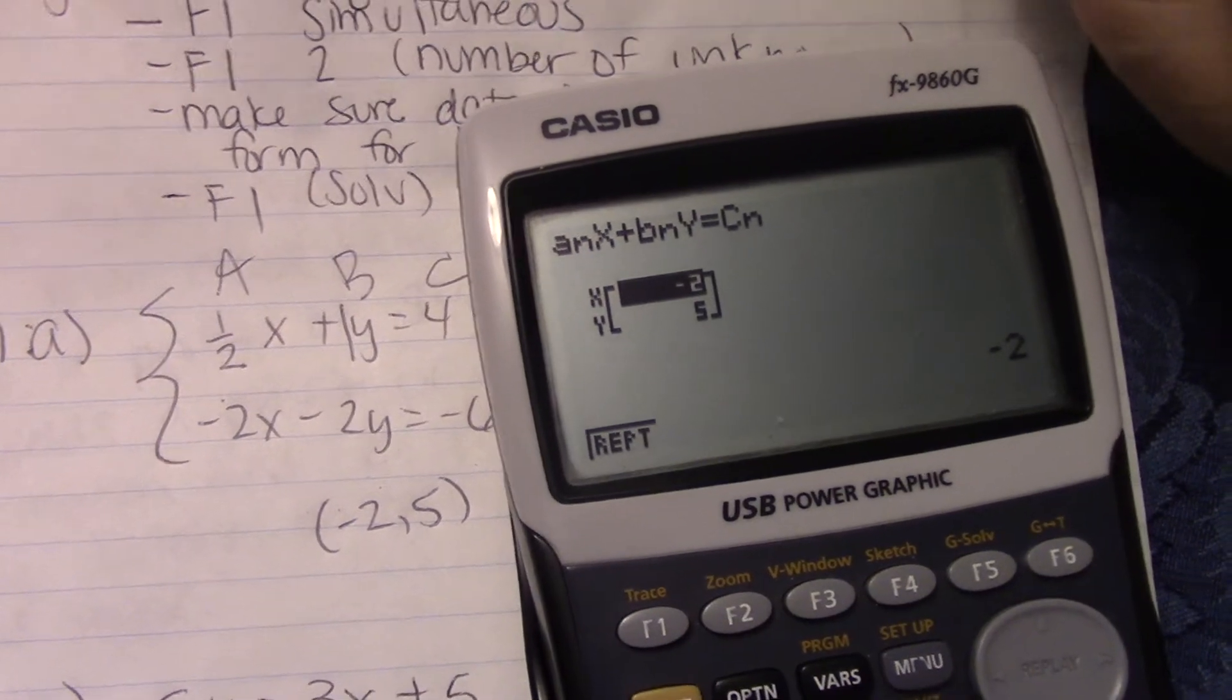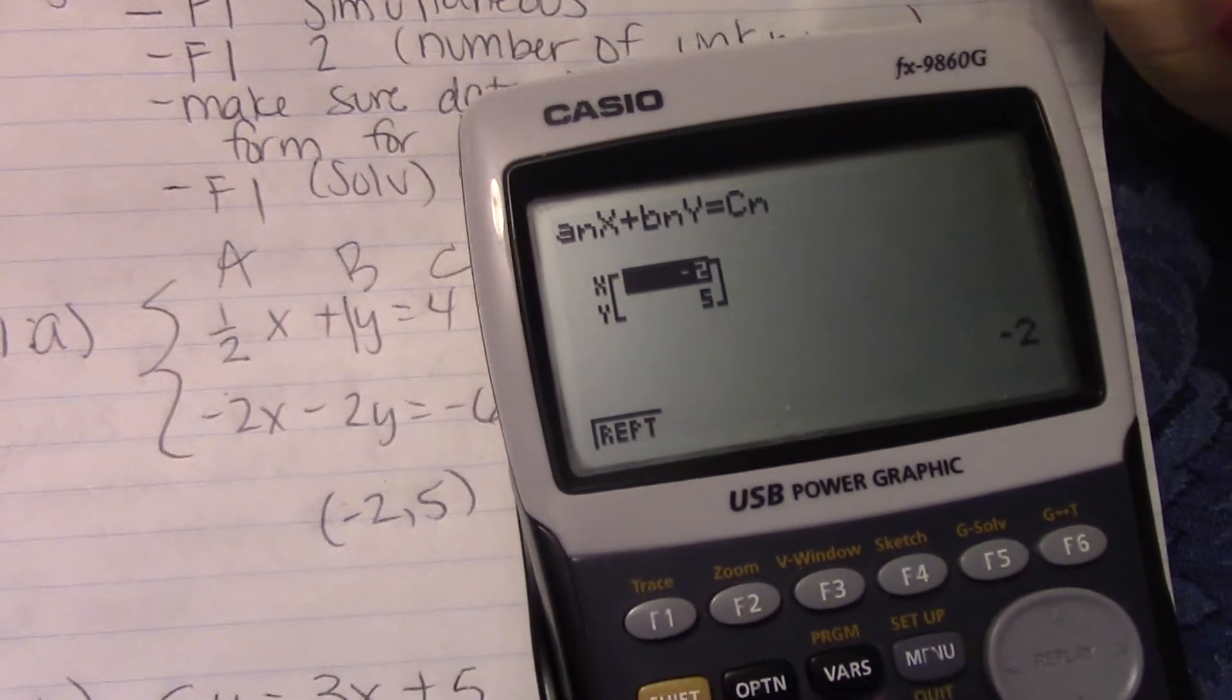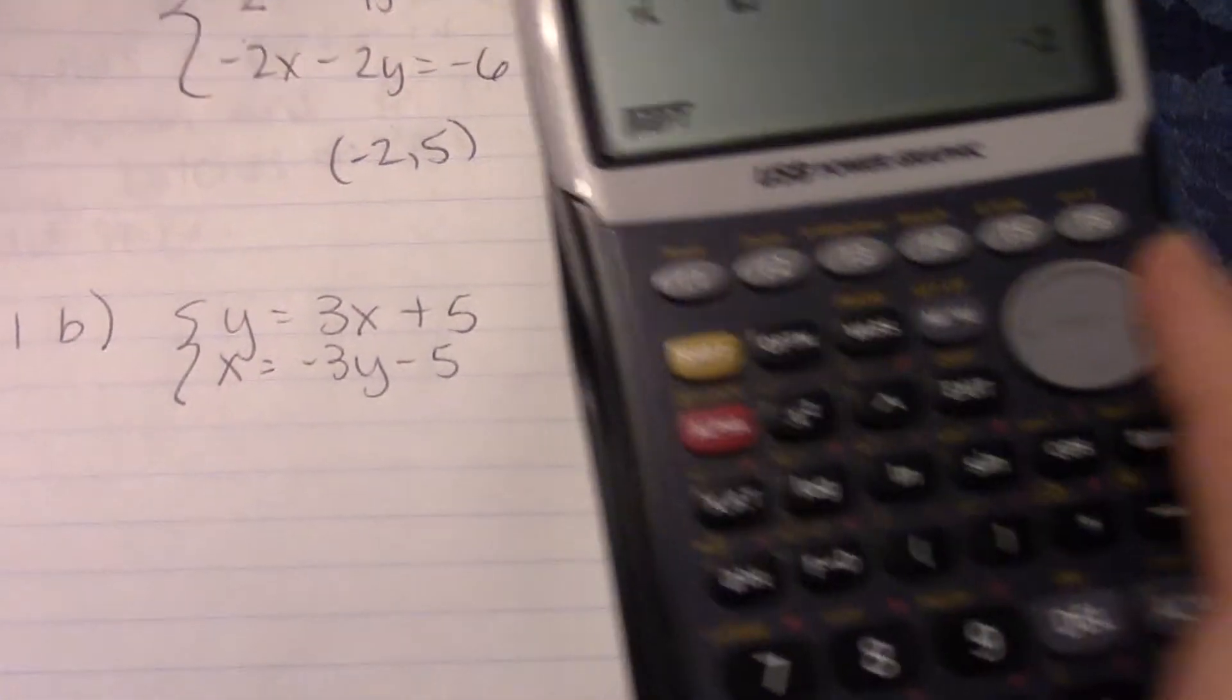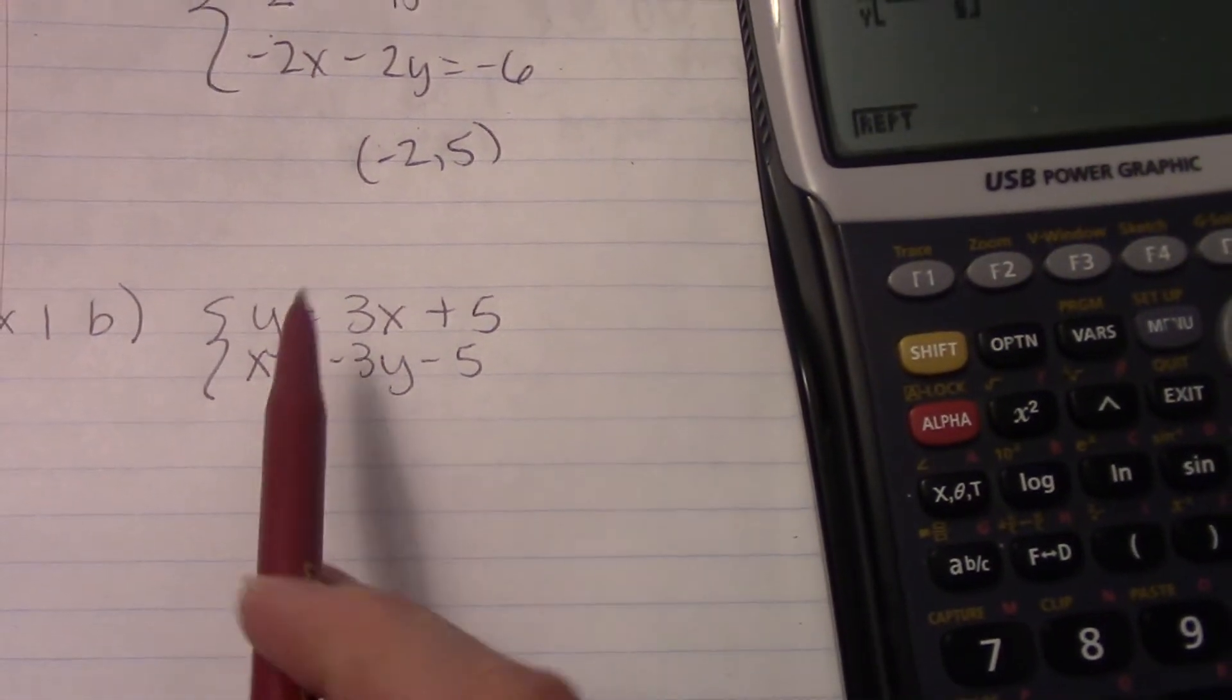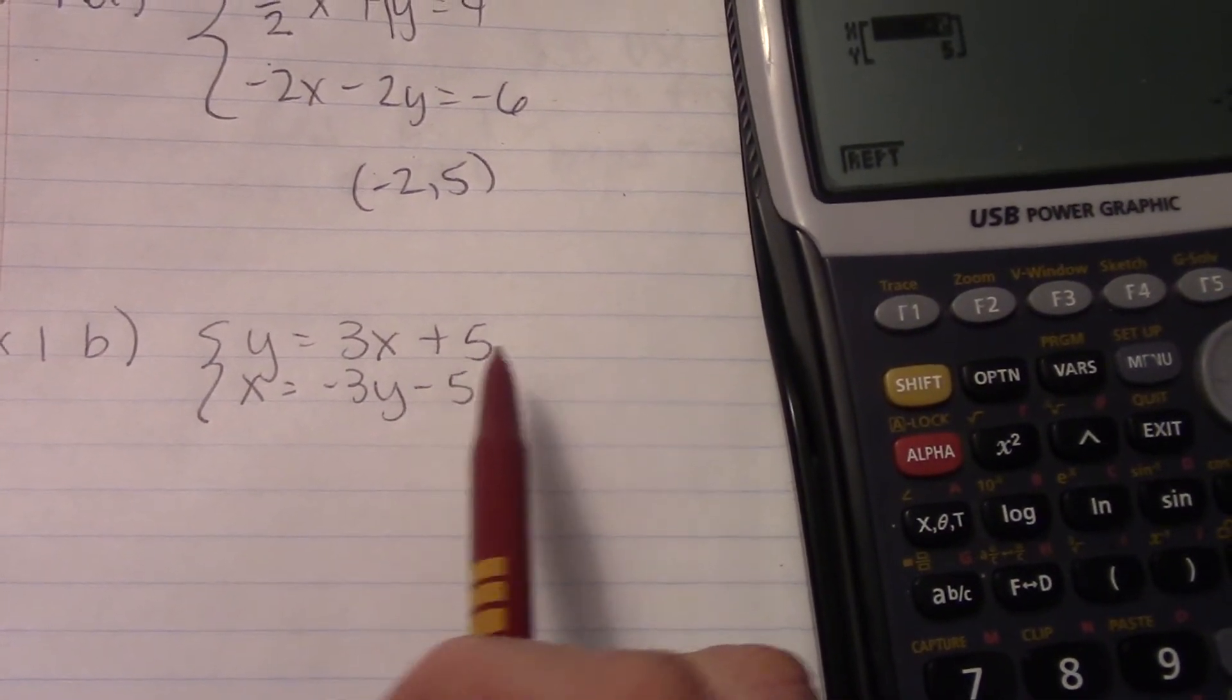So in an ACT, depending on how fast you are, either one can be quicker. Now this one, we have not an AX plus BY equals C. Okay? So we need to rearrange first. So, if we take the top one.